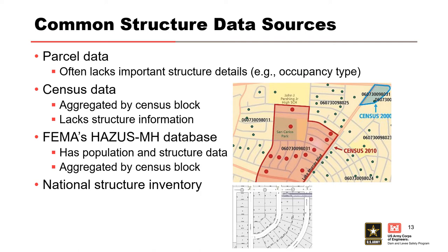Census data is great for population — it's the opposite of parcel data. You have great population data but you only generally know where people are within census blocks, not which specific structures they're in. The FEMA Hazus MH database has population data and number of structures per census block, but structure location is dictated by the census blocks. If a large census block has 30 structures, you don't know if they're all in one corner or spread evenly throughout. And then there's the National Structure Inventory, which I'll discuss in detail.